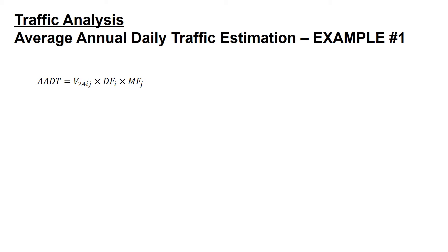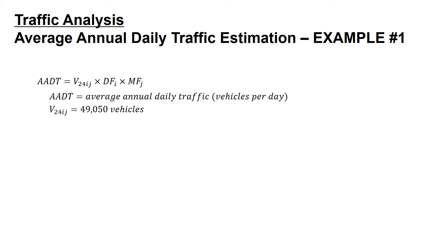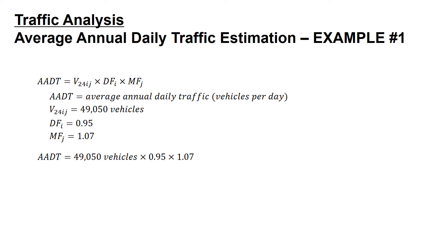Our equation: AADT equals our 24-hour volume times our daily factor times our monthly factor. Our 24-hour volume is 49,050 vehicles. Our daily factor for Wednesday is 0.95, and our monthly factor for November is 1.07. Multiplying those three values — 49,050 vehicles times 0.95 times 1.07 — gives us an AADT of 49,860 vehicles per day.